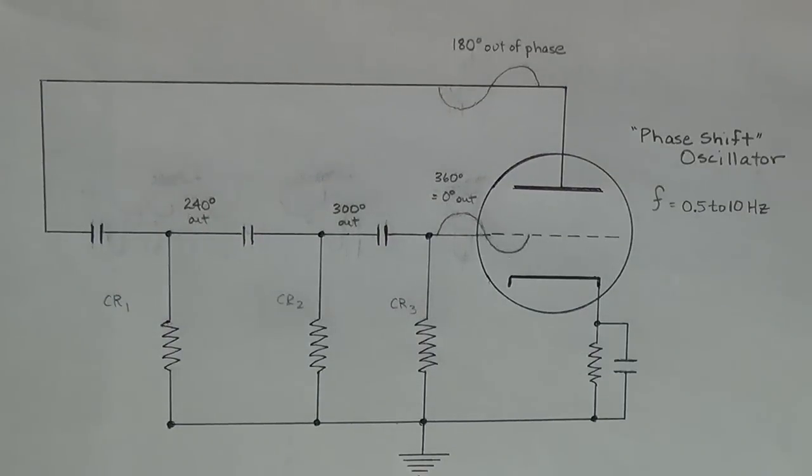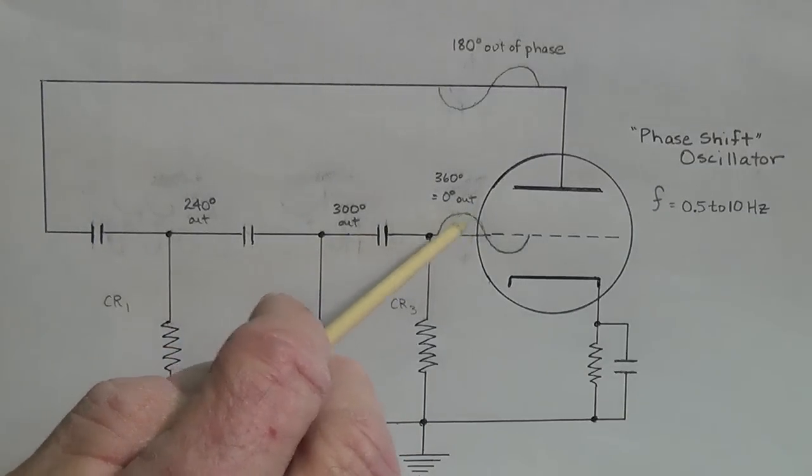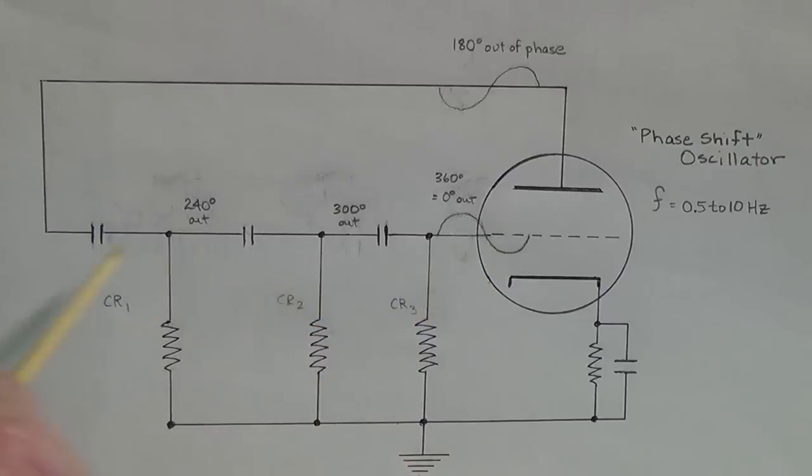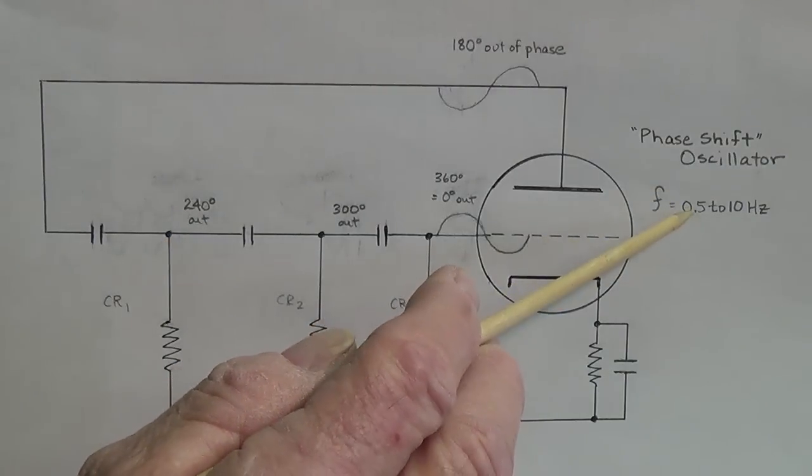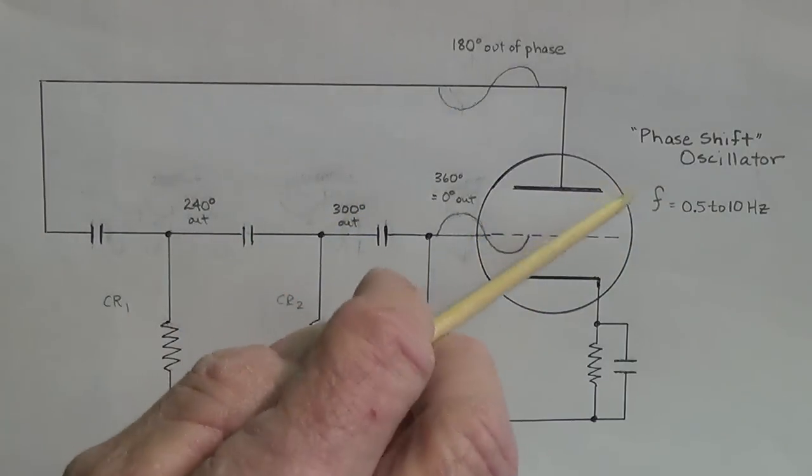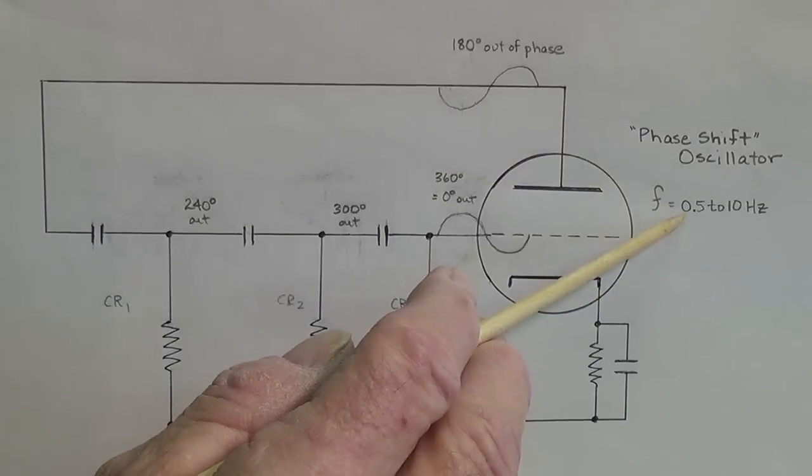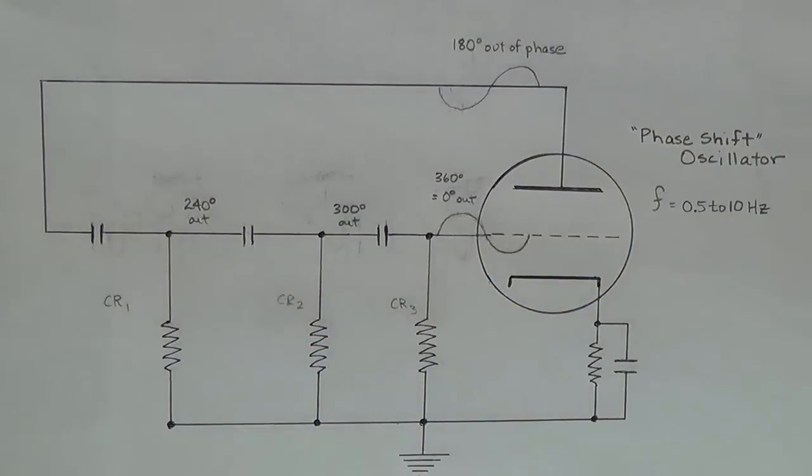So let's review real quickly. We take that out of phase plate signal, run it through three high-pass filters, change the phase of it 60 degrees each time so that we make it exactly in phase with the original input signal. We select values for the capacitor and the resistor that not only give us our 60 degree phase shift, but also control the speed of oscillation, and we end up with an oscillator, a phase shift oscillator here that will give us a very slow, low-speed oscillation range from around 0.5 to 10 cycles per second.